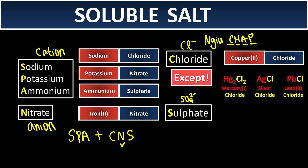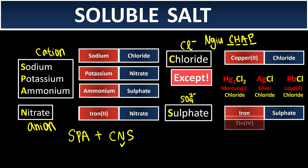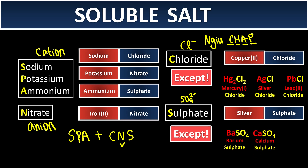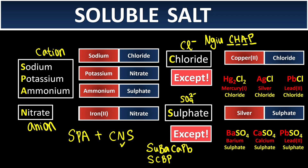For sulfate, all sulfate salts are soluble, but the exceptions are barium sulfate, calcium sulfate, and lead(II) sulfate. To remember these, think of the 'Subaru captain' — Ba, Ca, Pb. Or you can say 'student can be professional,' or 'the sandwich can be packed into containers.' These exceptions are insoluble.